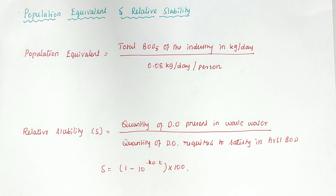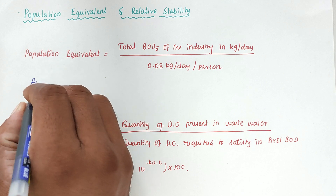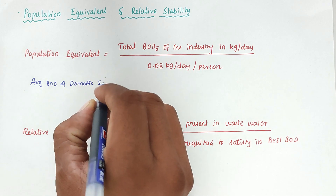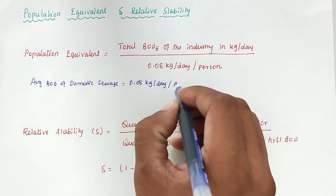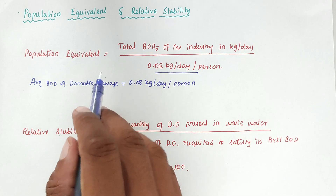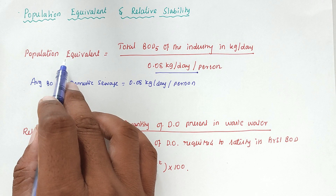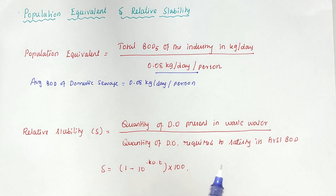Population equivalent is the comparison of domestic sewage and industrial sewage — how much treatment is required for industrial sewage compared to domestic sewage. The average BOD of domestic sewage is 0.08 kg per day per person. So the industrial sewage BOD equals the standard average BOD of domestic sewage multiplied by the population equivalent. That is why we use: Population Equivalent = Total BOD of industrial sewage divided by 0.08 kg per day per person.